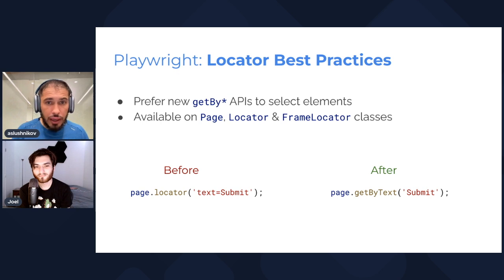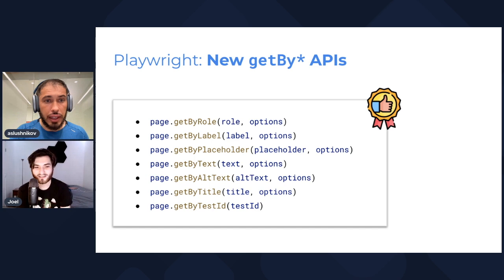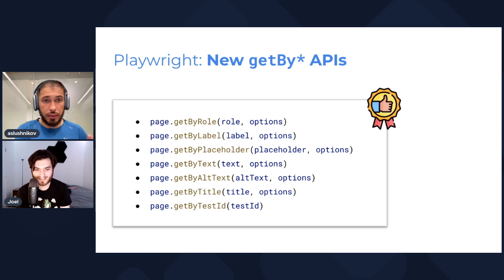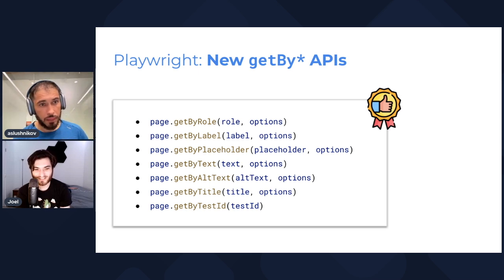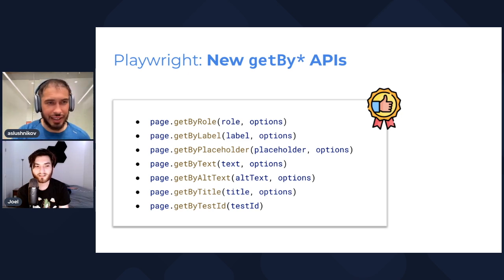You can still use the old methods, but you can also migrate everything to the new locators — they're actually more readable. Looking at the list again: we've got getByRole, getByTestId, getByText, and getByLabel. GetByRole, getByText, and getByTestId are the ones I'll use most. GetByLabel is nice too because it gets an input by its assigned label.